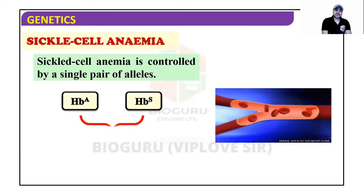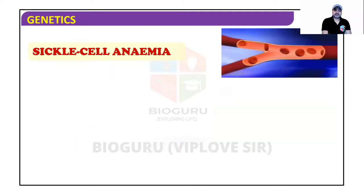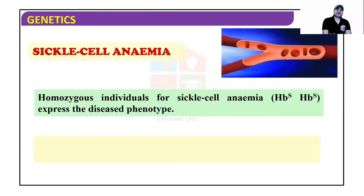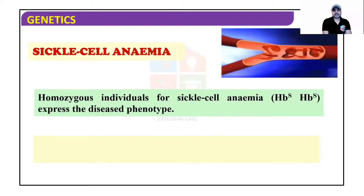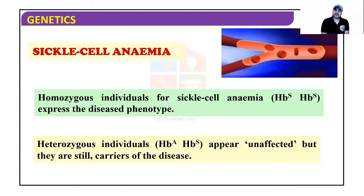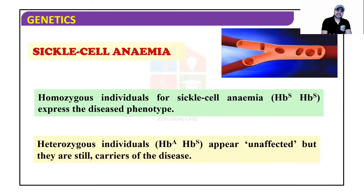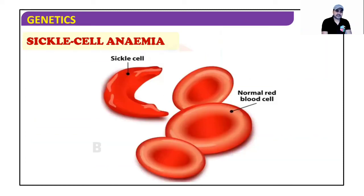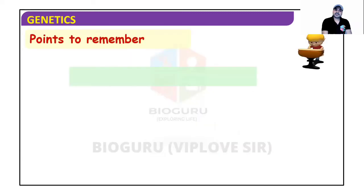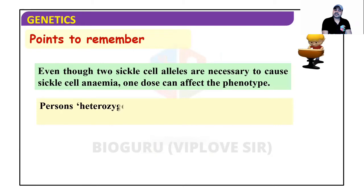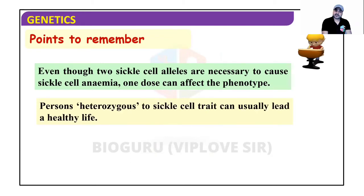Sickle cell anemia is controlled by a single pair of alleles, HbA converting to HbS, on chromosome number 11. Homozygous individuals (HbS/HbS) express the diseased phenotype, while heterozygous individuals (HbA/HbS) appear unaffected but are carriers of the disease.